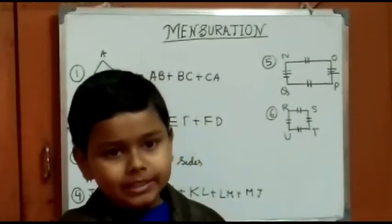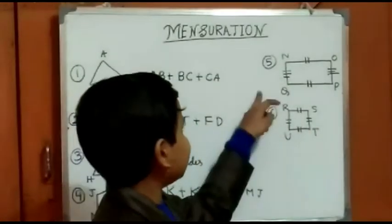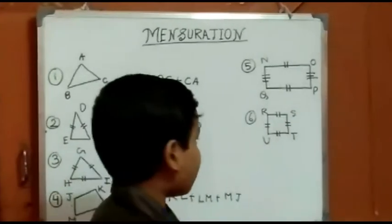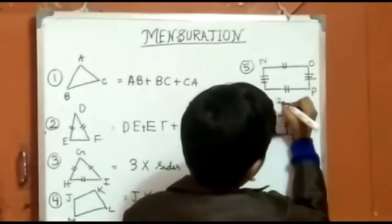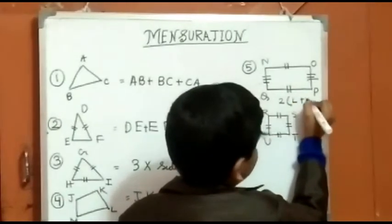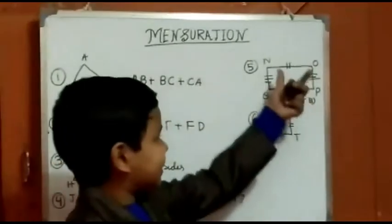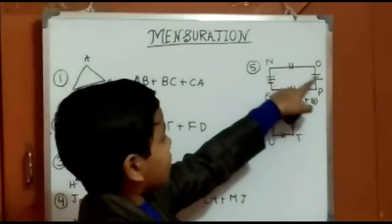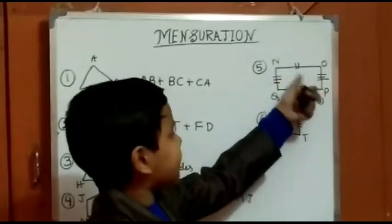Now there are some quadrilaterals like specials, like rectangles. Here the opposite sides are equal. So its formula is 2 bracket length plus breadth. So length is this side and breadth is this side. So if we add this side and then multiply it by 2.